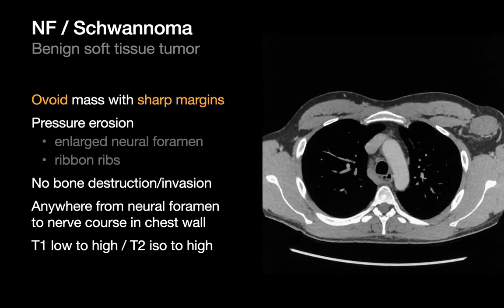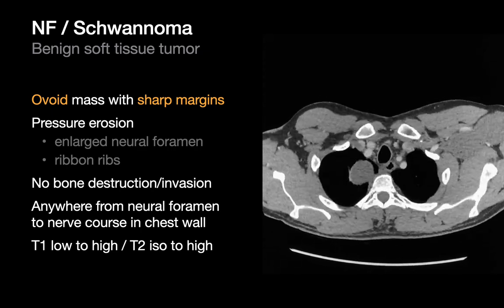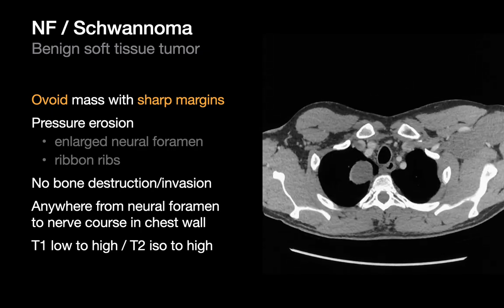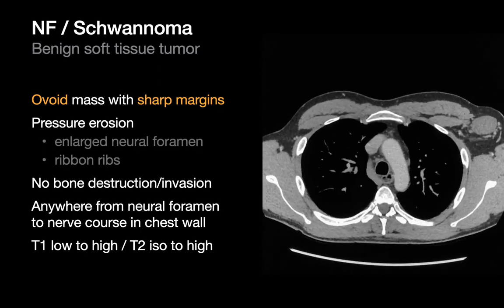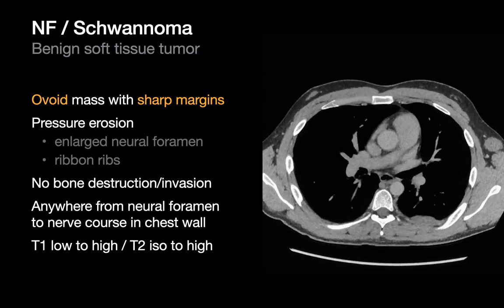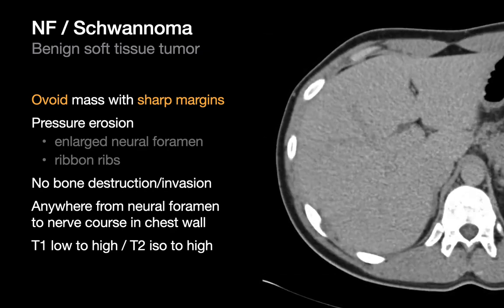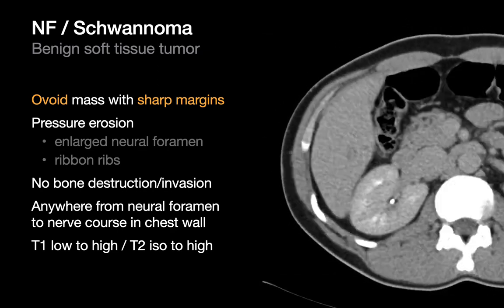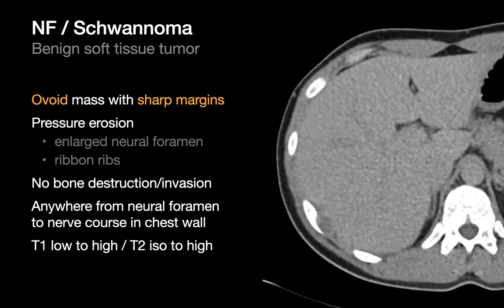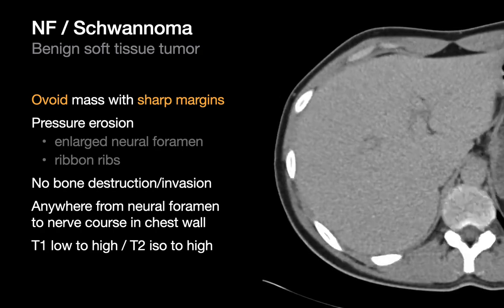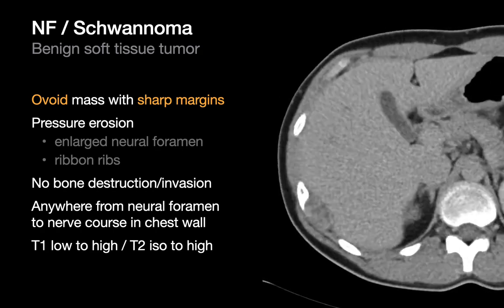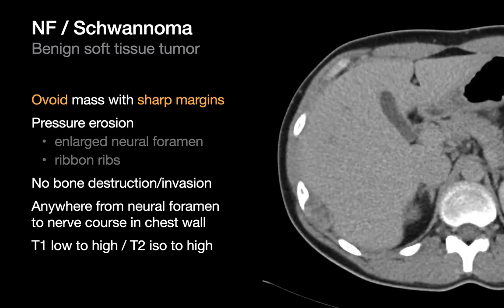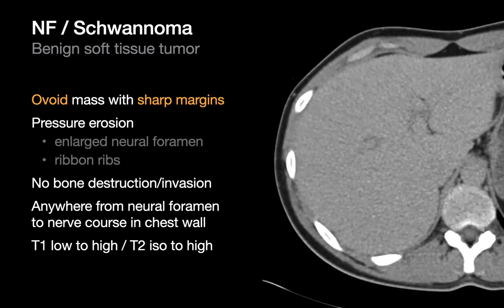Most cases of elastofibroma dorsi are asymptomatic, but a small number can be associated with symptoms like pain or shoulder snapping. Cases of NF or schwannoma that present as chest wall masses usually arise from the intercostal nerves that parallel the ribs. Although ribbon ribs and enlarged neuroforamina can occur due to pressure erosion, there should otherwise be no bone destruction in cases of NF or schwannoma, and these tumors also tend to grow slowly.